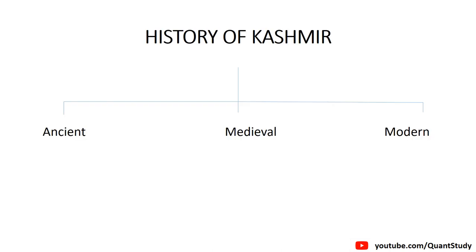As you all know, history is divided into three parts: Ancient, Medieval, and Modern. Similarly, Kashmir's history is also divided into three parts: Ancient, Medieval, and Modern. In Ancient, there are three dynasties. In Medieval, there are eight. In Modern, there are twelve dynasties, and then we will read what happened in 1947.